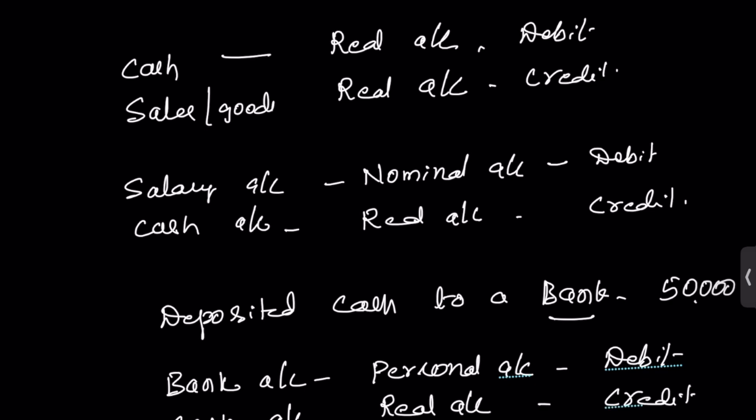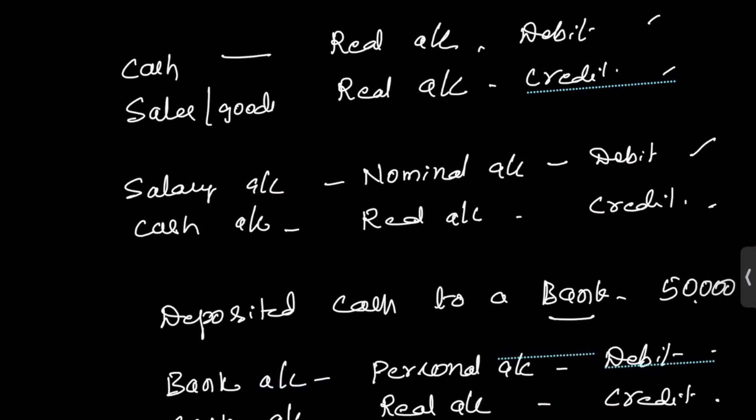For each financial transaction of a business, we find two accounts — one will be debited and one will be credited. These two accounts may be real, personal, or nominal. You should be able to identify two accounts in every transaction: one to debit and one to credit. That is the accounting equation that matches your assets and liabilities. We will take a few more examples in the coming video.